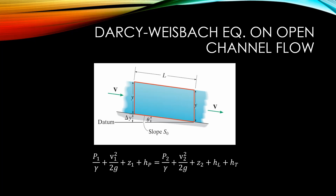In this system, we have no pumps or turbines, so we can eliminate those terms from the equation. Also, remember that for channels with little to no vertical acceleration, we can take the change in pressure along the vertical axis as equal to a hydrostatic change in pressure. This means that at any two points in the control surfaces, the pressures should be the same and there should be no variation between the upstream and downstream pressure, so we can cancel out the pressure from this equation.